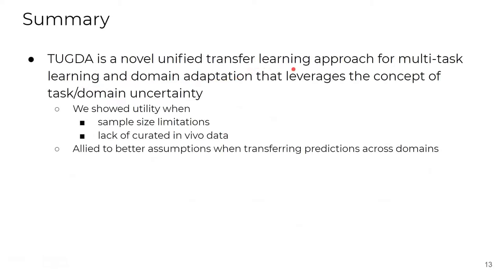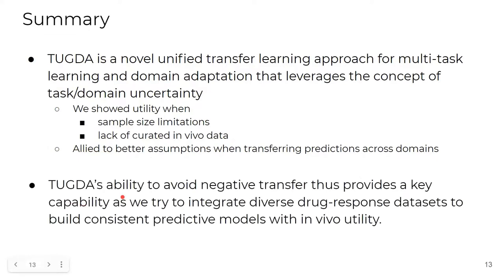So, in summary, TUGDA is a novel unified transfer learning approach for multitask learning and domain adaptation that leverages the concept of task uncertainty. We showed the utility in scenarios presenting sample size limitations or a lack of curated in vivo data. TUGDA also presents a realistic assumption when transferring predictions across domains. So, TUGDA's ability to avoid negative transfer provides a key capability as you try to integrate diverse drug response datasets to build consistent predictive models with in vivo utility.